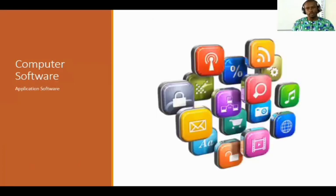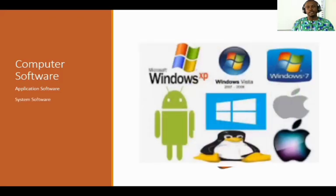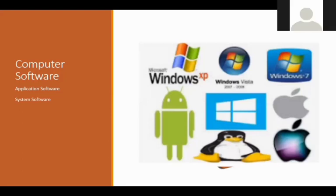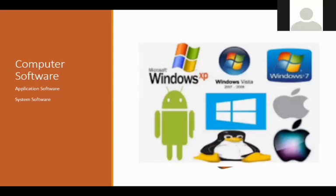Computer software is actually related to two parts. The first is the application software, and the second is the system software. Most times we often say software and we don't know which is which. So I am going to take this session to explain what the application software is all about and what the system software is all about.